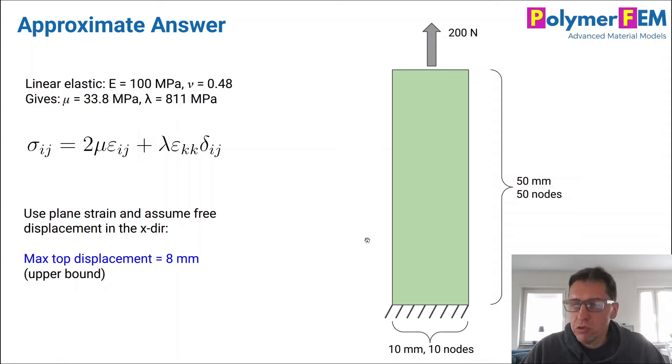And if you do that and you assume that the width of the specimen can shrink any way it likes, so that's a simplification that makes it possible to solve it in closed form, I get a top displacement of about eight millimeters in this case. So that's what I'm going to compare to when I run the code later on.